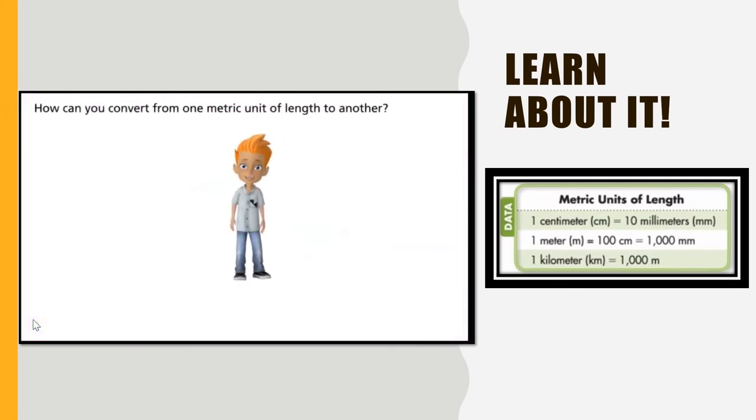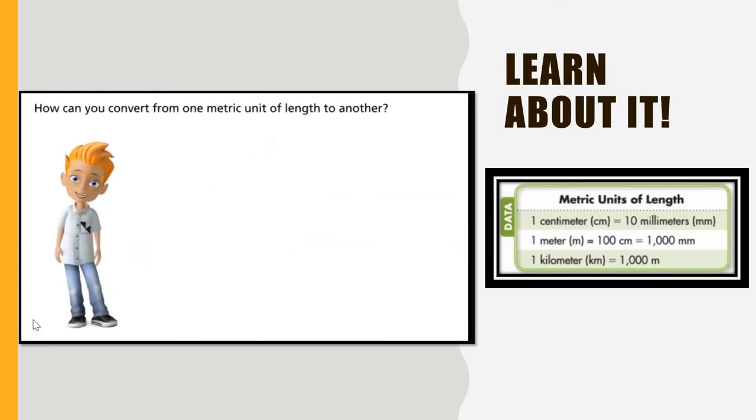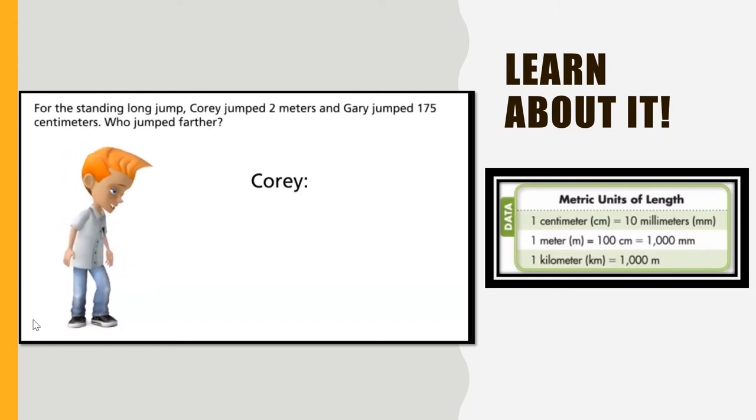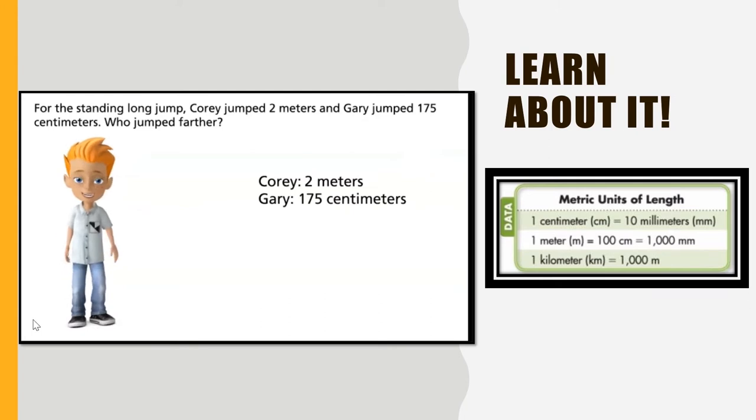How can you convert from one metric unit of length to another? Let's find out. For the standing long jump, Corey jumped 2 meters and Gary jumped 175 centimeters. Who jumped farther?